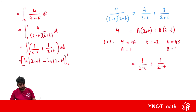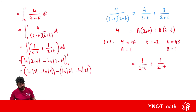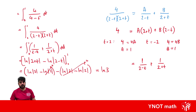Substituting the bounds: at T = 1 we get ln|3| − ln|1|; at T = 0 we get ln|2| − ln|2|. The ln(2) − ln(2) terms cancel to 0, and ln(1) = 0, so we're left with ln(3) as the final answer.